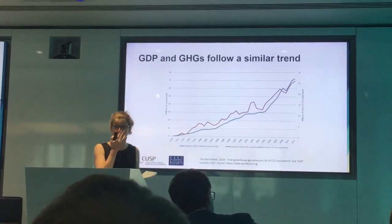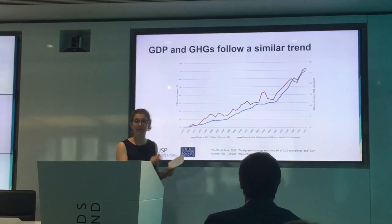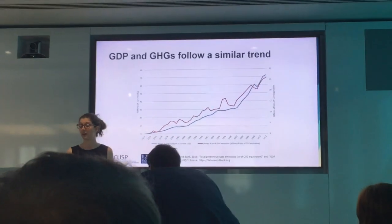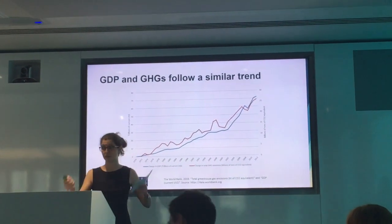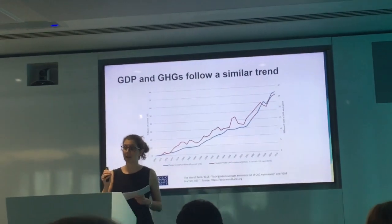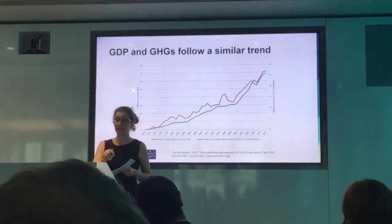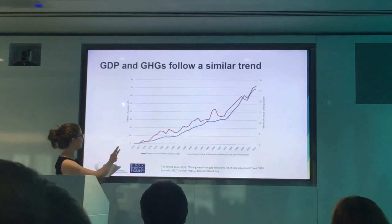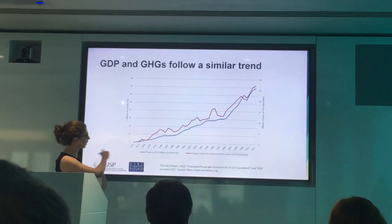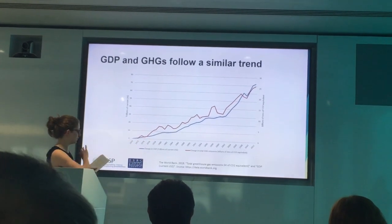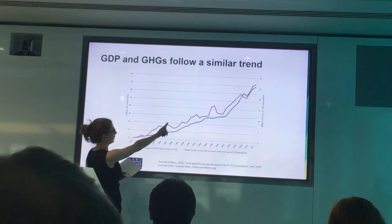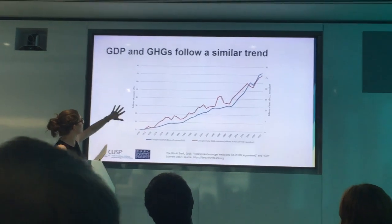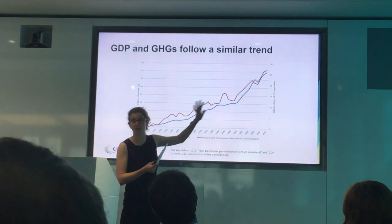I'd like to set the scene to my talk with a very simple but important graph. It really can't tell us very much on its own, but I think it's a backdrop to what I think is one of the most important questions in economics today: are economic growth and the traditional tools of mainstream economics capable of or really compatible with meeting Paris Agreement targets? This graph contains World Bank data representing the change in global greenhouse gas emissions — the red line — and also the change in global GDP — the blue line — from 1970 to 2012. On the left we have trillions of US dollars and on the right billions of tonnes of carbon equivalent emissions.